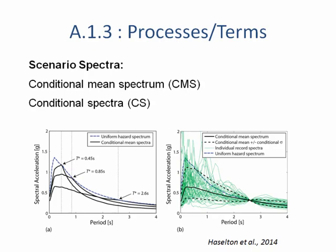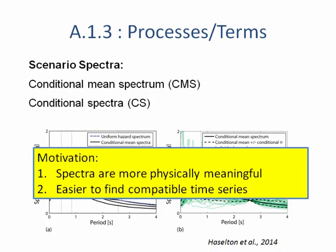The motivation for this type of analysis is that you get spectra that are more physically meaningful. If you're matching the response for the long period, you're actually using records that represent long-period ground motions — not jacking up short periods with unnecessary frequency content that doesn't physically exist. It's also easier to find more compatible time series, because you can find records that actually match that type of event instead of something that doesn't really exist.